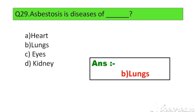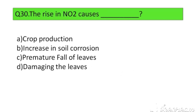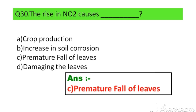Question number 30. The rise in SO2 causes: Option A. Crab production, B. Increase in soil erosion, C. Premature fall of leaves, D. Damaging the leaves. The right answer is Option C: Premature fall of leaves.